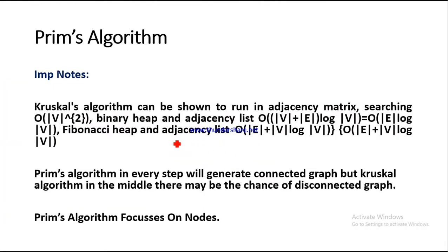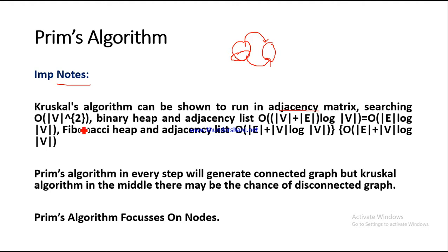Now let's see the important notes. If we use an adjacency matrix, the time complexity of Prim's algorithm will be O(V²), where V is vertices and E is edges — every time we compare vertex to find the minimum adjacent edge. If we use a binary heap and adjacency list, the running time complexity is O((V + E) log V), which can also be expressed as O(E log V).